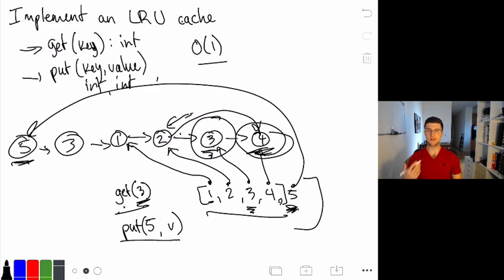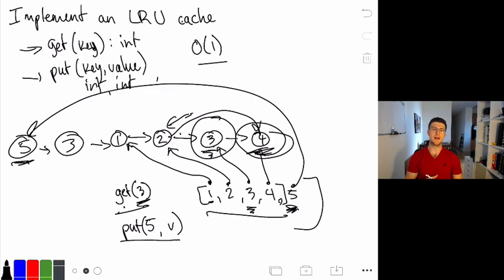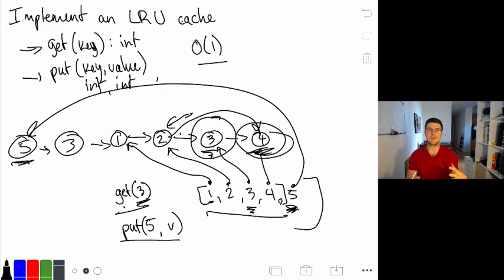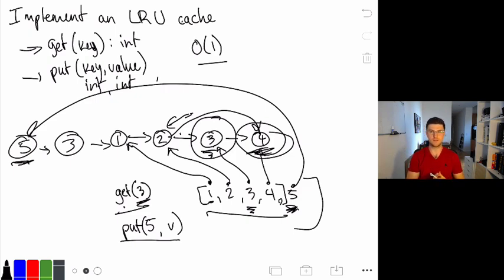By just keeping this secondary data structure — the map — we can now do this problem in constant time, with both get and put being O(1). This is a good problem to know off-hand since it comes up fairly frequently. The key insight is identifying where the inefficiency is and addressing it — the same basic approach we use across many problems. That's all for this one, see you in the next video.